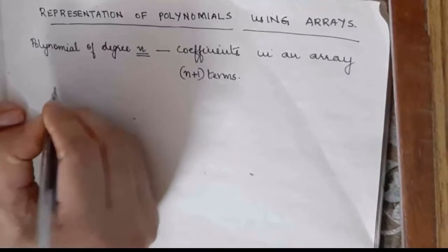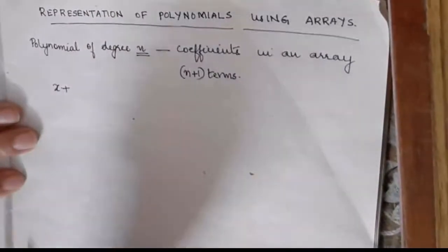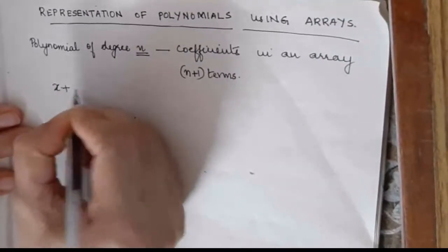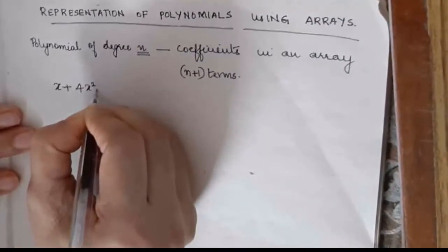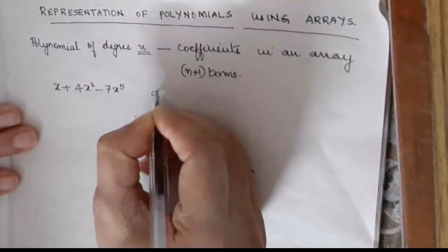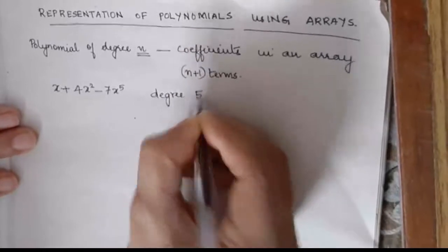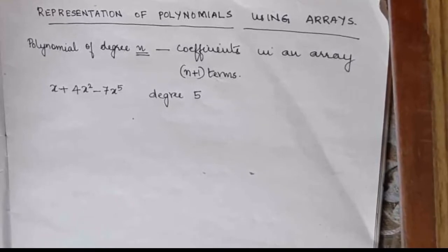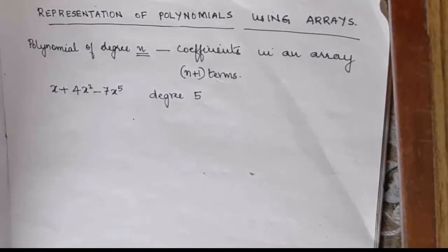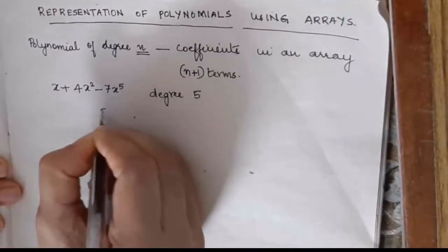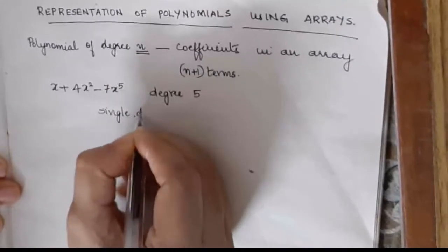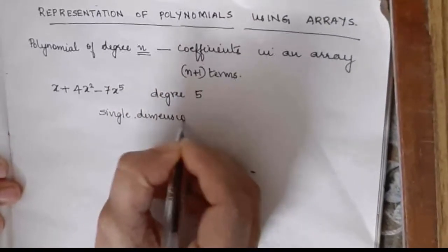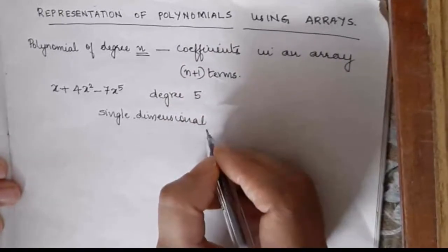For example, if the expression is x plus 4x squared minus 7x raised to 5, here the degree of the polynomial is 5. So it can be represented using a single dimensional array for storing the polynomial.